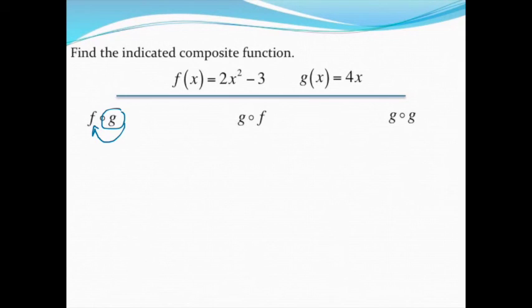For example, I'm going to start by writing down the f function, which is 2 times x, but I'm not going to put x down. I'm going to put a blank space squared and then minus 3. Since I'm just plugging the g function into the x spot right there in that blank space, I'm just going to write the g function, which is 4x.